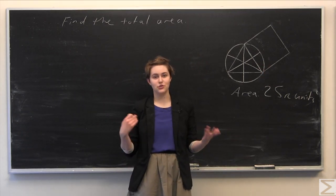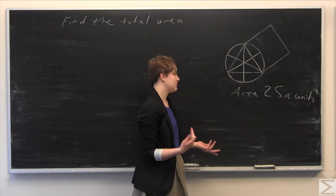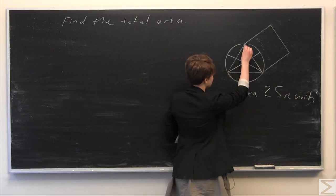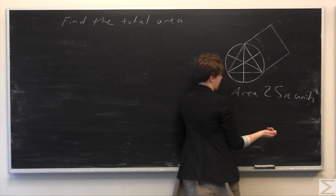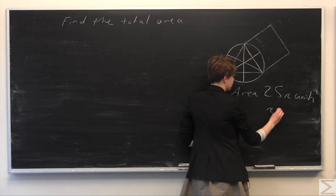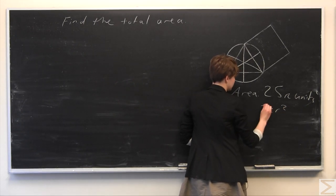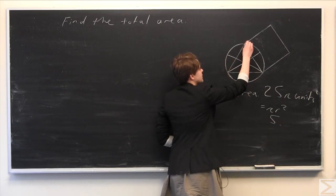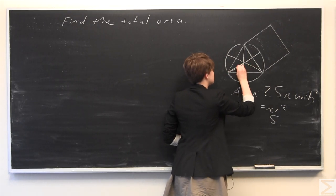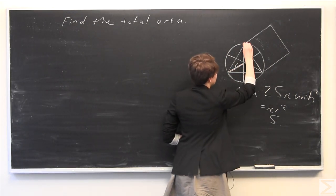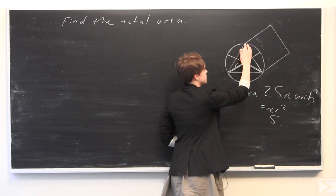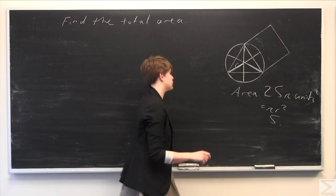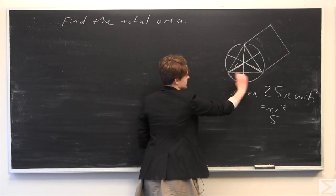We know that the radius of the circle is going to be 5, because the area is 25π units squared and the area of a circle is given by πr². So area equals πr², meaning the radius is the square root of 25, which is just 5. The radius is going to be these center lines here, and we're going to zoom in on one of these little triangles to see how we can solve for this side length.